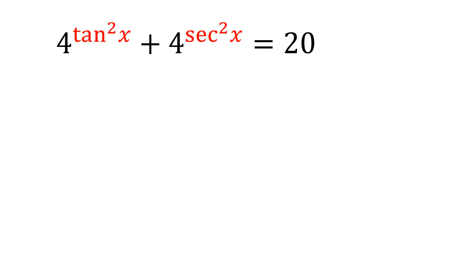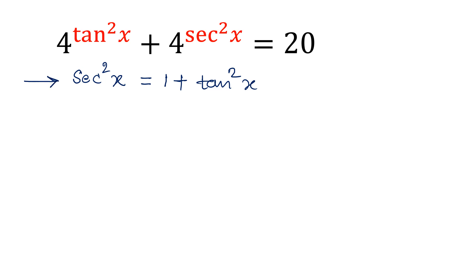Let's start by using the standard identity: sec²x = 1 + tan²x. We substitute the value of sec²x, so the equation converts to 4^(tan²x) + 4^(1 + tan²x) = 20.